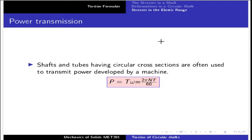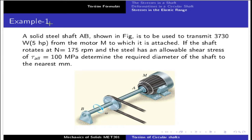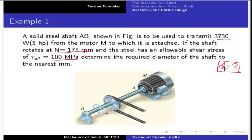In this class, we will complete the theory portion and discuss the problems in this area. The first problem is: a solid steel shaft AB, as shown in figure, is to be used to transmit 3730 Watt or 5 HP from the motor M to which it is attached. We are going to design the shaft — find its diameter. This is a basic design problem.